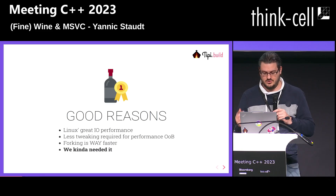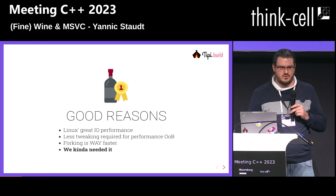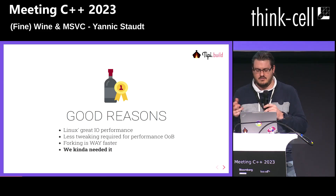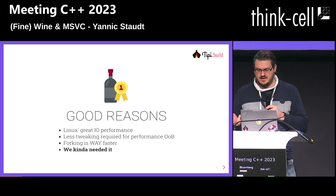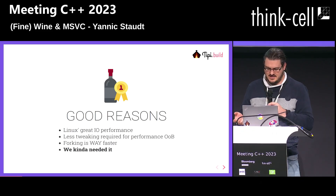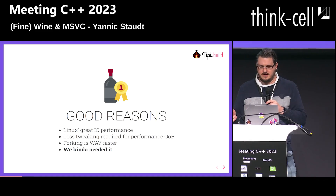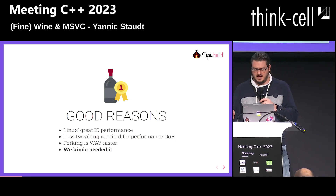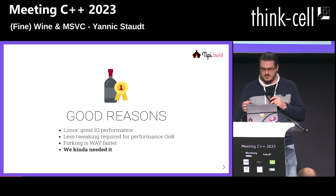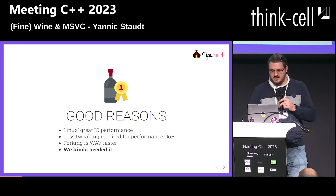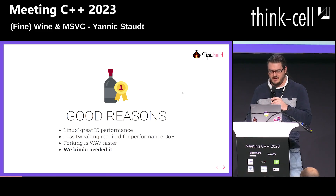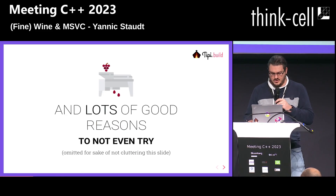There are a lot of good reasons to do this: Linux has great IO performance, there's no antivirus in your way, and NTFS — there are many better file systems than NTFS in terms of speed. There's a lot less tweaking required. And one special thing: forking on POSIX or Unix is way, way faster. So there's also a lot of good reasons not to even try, obviously — no one thought of this in the design phase of MSVC.